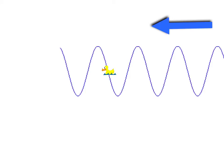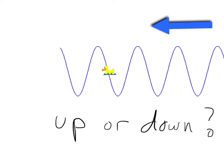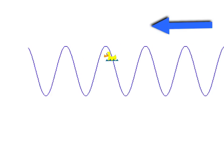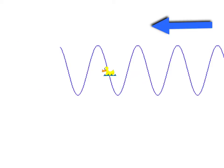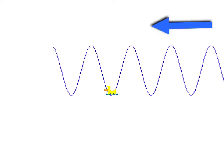Here's a question. Little Ducky is on his wave, and this wave is going from right to left. Is Ducky about to go up or down? Well, let's find out. Ducky doesn't move along the wave — he just goes up and down as the waves go by. What was coming towards Ducky was actually a trough, so Ducky ends up going down instead of up.